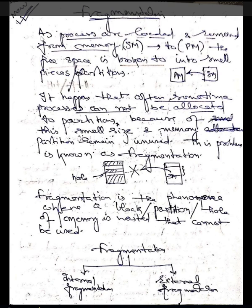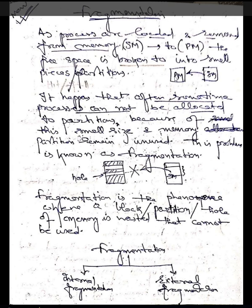As processes are loaded and removed from memory — that is secondary memory — to primary memory, the free space is broken into small pieces or partitions. Whenever a process saved in secondary memory is moved to primary memory, that particular space is automatically broken down into small blocks or pieces.